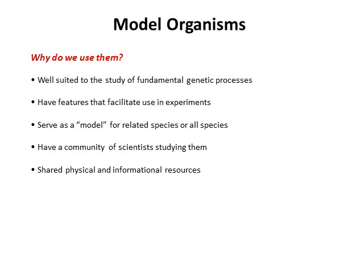The advantages of having a large scientific community are that you can share expertise and reagents, and by doing so research progress occurs at a far more rapid rate than would occur if everybody was doing research in a vacuum. Another important factor for model organisms is that they serve as a model for related species or ideally for all species. Bacteriophages are very simple bacterial viruses, but with regards to how they transfer genetic information, the fundamentals are similar from bacteriophages through to higher systems.